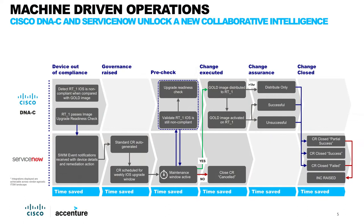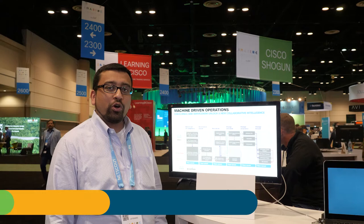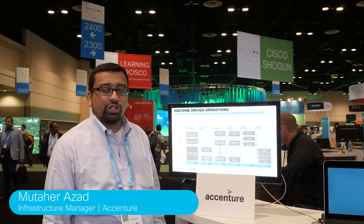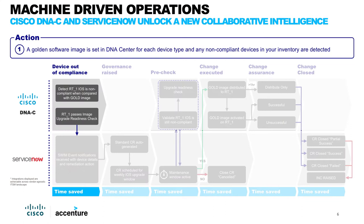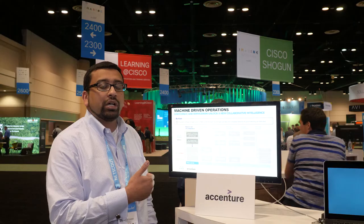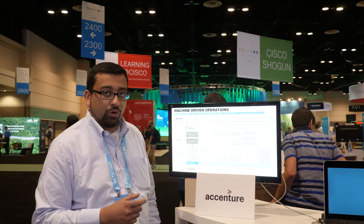Let me turn things over to my colleague Mutahir to walk you through what that looks like. In the demo today, we're going to show how DNA Center can detect a device that's out of compliance, and through ServiceNow, turn the device back into compliance. As part of the first phase, DNA detects that the device is out of compliance, and that's what the process flow is currently showing.